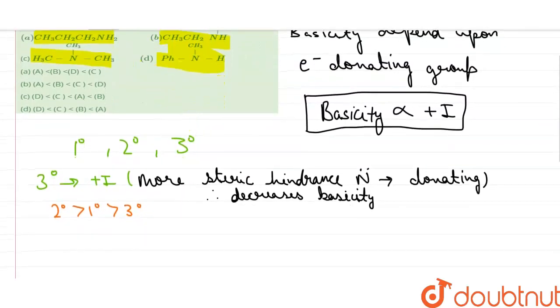Talking about amine in option D, which is Ph-NH-CH3, since the electron of the nitrogen will be delocalized with the phenyl, as the resonance effect, it will be less available.